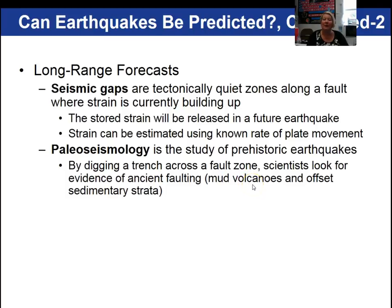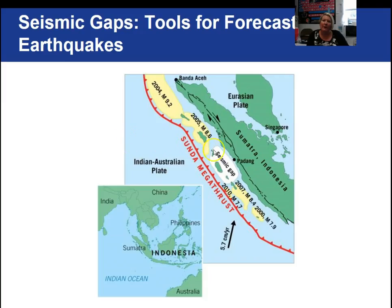In paleoseismology we look for sand or mud volcanoes and offset sedimentary rock layers. Looking at a seismic gap in Indonesia, this region has been tectonically quiet, so the potential for a large earthquake due to the subducting slab is generally thought to be fairly high. Past earthquakes in 2004 and 2005 in that region were great earthquakes with magnitudes of 9.2, 8.6, 8.4, and 7.9 — all produced by megathrust faults, which generate the largest earthquakes.